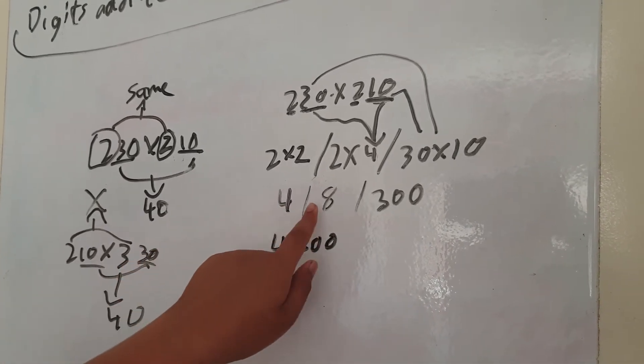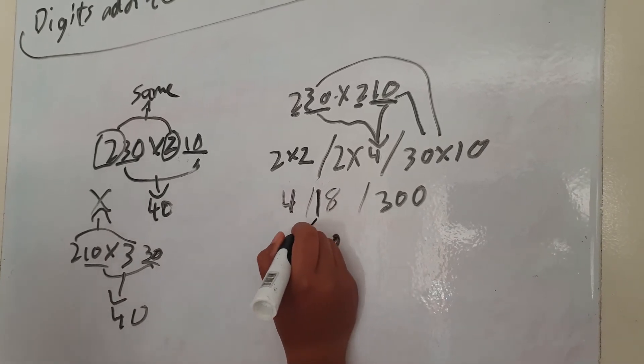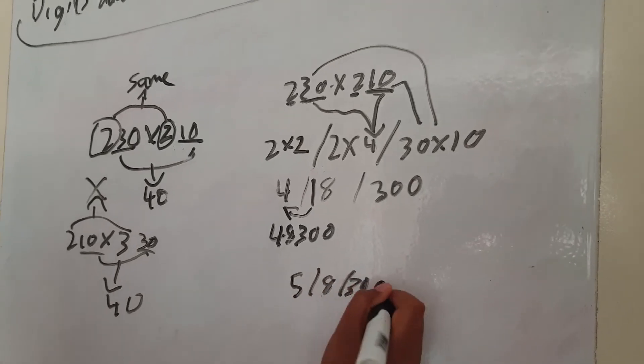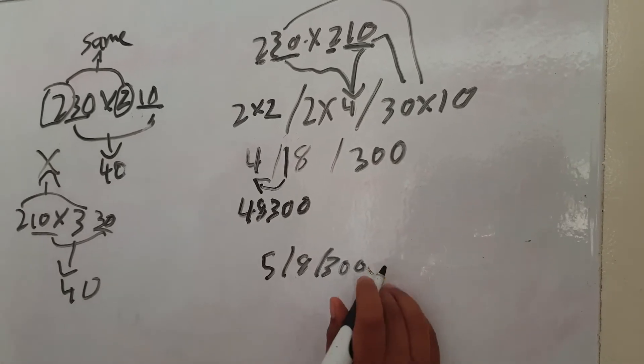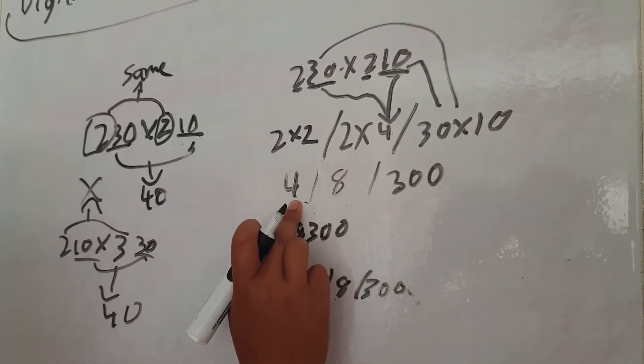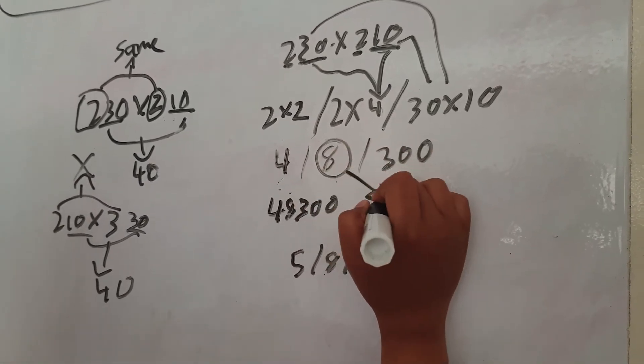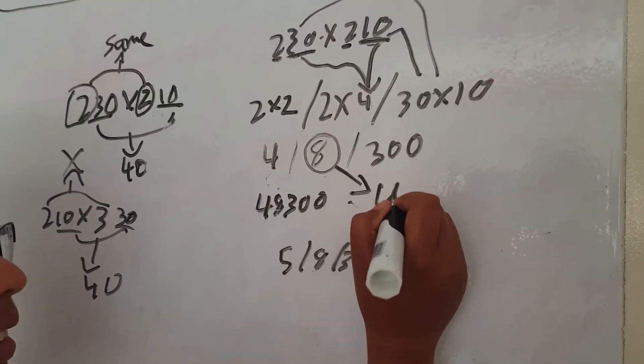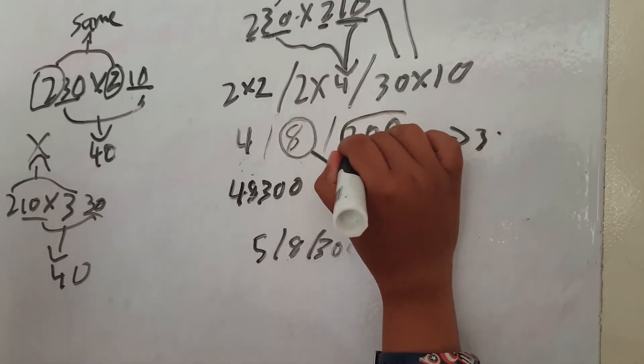Now if there was more than one digit here, for example, let's say there was 18 here, then you would send this one over here and it would become 58,300. So that part can only have one digit.